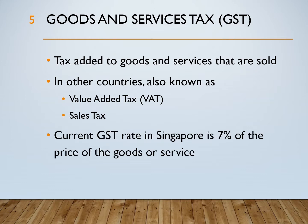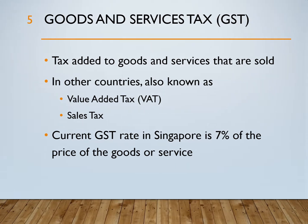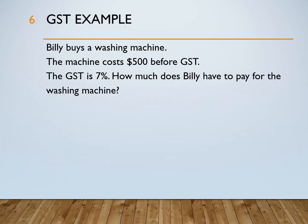In Singapore, the current GST rate is 7% of the goods or service. Let's look at an example on GST. Billy buys a washing machine. The machine costs $500 before GST. The GST is 7%. How much does Billy have to pay for the washing machine?